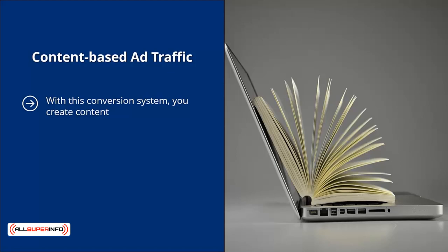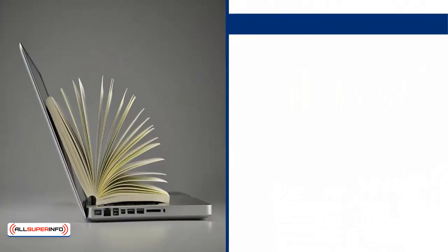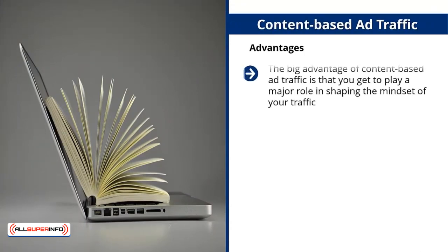Content-based ad traffic. With this system you create content — maybe you're promoting it on somebody else's website and paying them to publish it, or you have a content site like a blog. There's a link in your content, and if people click on that link they go to another page on your website that promotes the affiliate offer, or they go directly to your affiliate sponsor. These links can be text links or linked to an image.